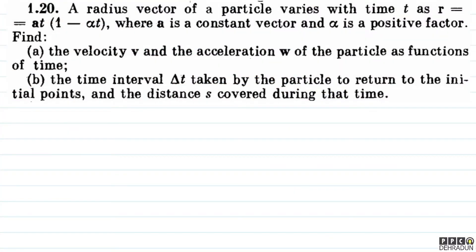Welcome students. Let's try to analyze this beautiful question from Irodov. The question says: the radius vector of a particle varies with time t as r vector equals a vector times t times (1 minus alpha t), where a vector is a constant vector and alpha is a positive factor. Find the velocity v vector and the acceleration w vector of the particle as functions of time, and the time interval delta t taken by the particle to return to the initial point, and the distance s covered during that time.